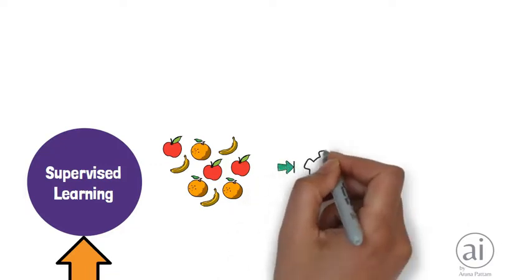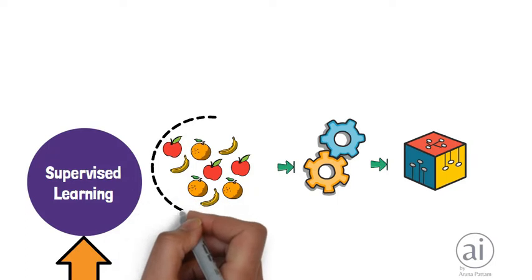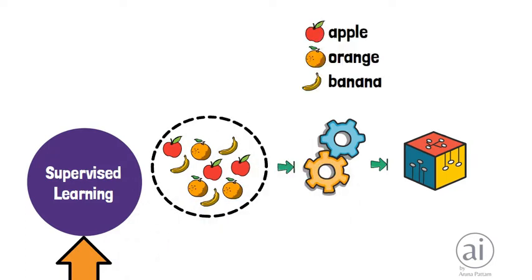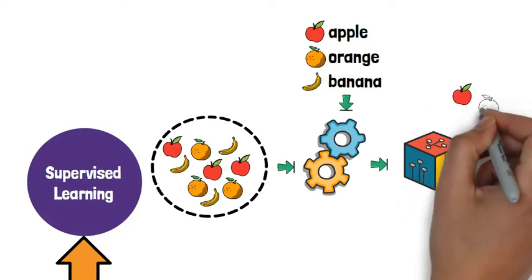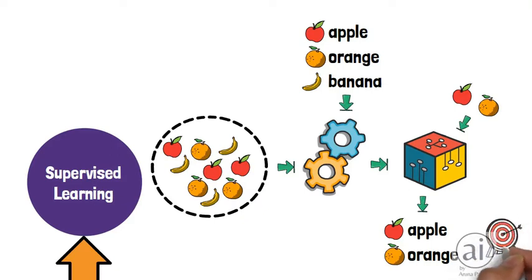In this method, both the past data and previous outcomes are required as input. By training with this data, the model is able to predict results that are more accurate. Common applications include house price prediction and medical imaging.